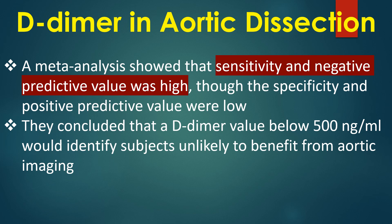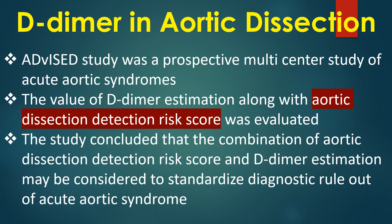A meta-analysis showed that sensitivity and negative predictive value of D-dimer were high, though specificity and positive predictive values were low. A D-dimer value below 500 ng/mL would identify subjects unlikely to benefit from aortic imaging. The ADVISED study, a prospective multicentre study, concluded that the combination of aortic dissection detection risk score and D-dimer estimation may be considered to standardize diagnostic rule-out of acute aortic syndrome.